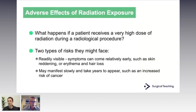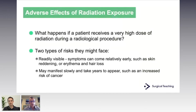Generally, patients might ask: 'I'm having a CT scan — what sort of risk do I have?' There are two types of biological effects, two types of adverse effects from radiation. Some would be readily visible and happen very acutely, and we'll talk about how we categorize those, while others would happen in a delayed fashion.